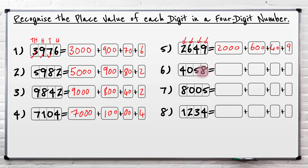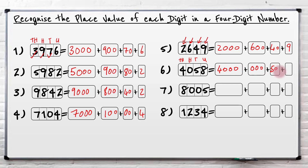So four thousand and fifty eight. Put my four thousand first. I don't have any hundreds here. Because it's thousands, hundreds, tens and units — it's so important to recognise your place value. Any hundreds? No hundreds. Any tens? Yes, five tens. And any units? Yes, eight units.